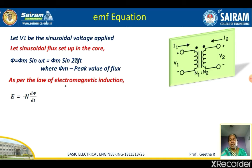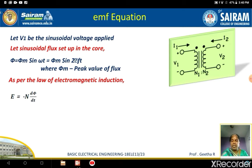As per the law of electromagnetic induction, the EMF induced is proportional to the rate of change of flux. For a single turn it is dφ/dt; for N turns it is N × dφ/dt. So E can be written as E = −N dφ/dt.